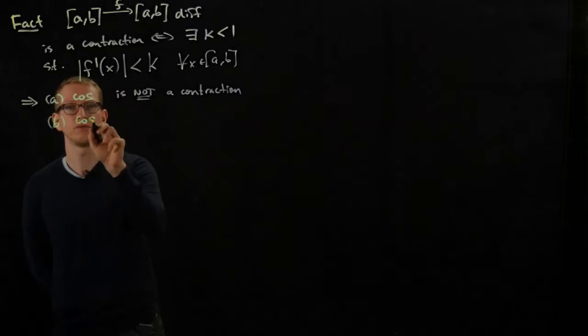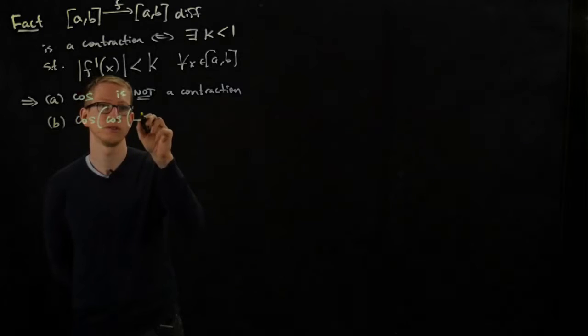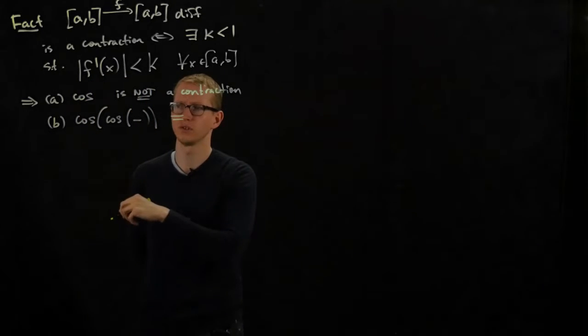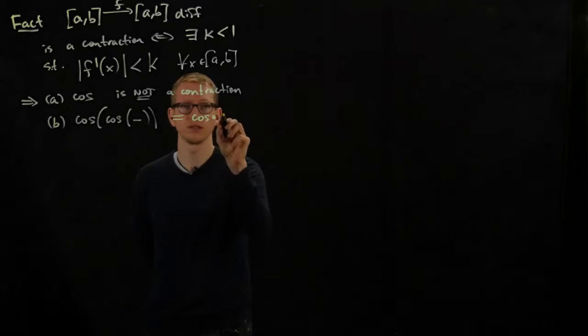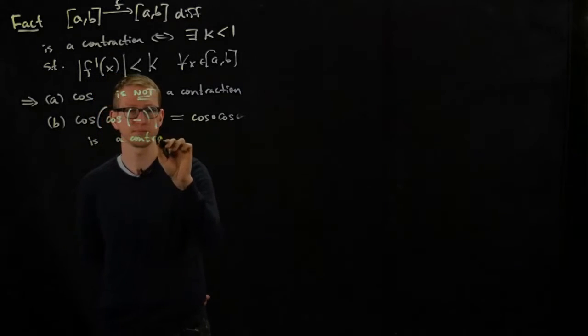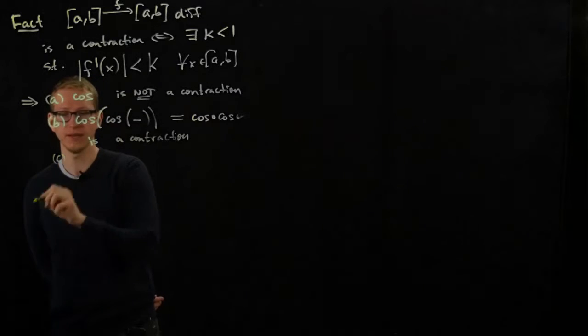However, if you take cosine and apply it to itself again, so if you consider this function—it's a little confusing to write it as cosine squared in this particular case—but I'll write it as cosine composed with cosine. So this function is a contraction. And I'll leave you to check that. You can use this theorem, this fact again.